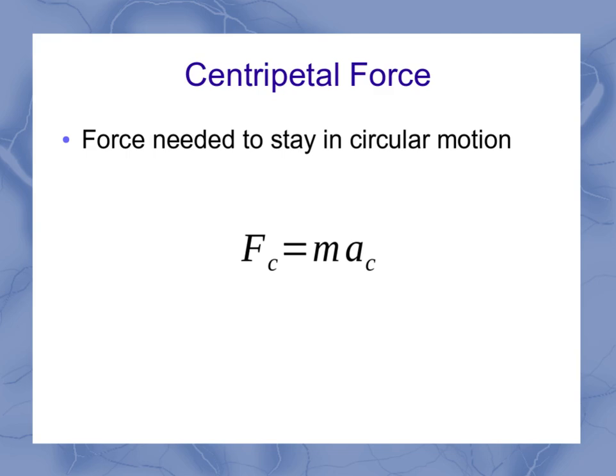Like any force, it's going to be a mass times an acceleration. In this case, since it's a centripetal force, it's mass times centripetal acceleration. But we know what that centripetal acceleration should be. We saw in our review slide just a moment ago that it's V squared over R. So that means my centripetal force is MV squared over R.